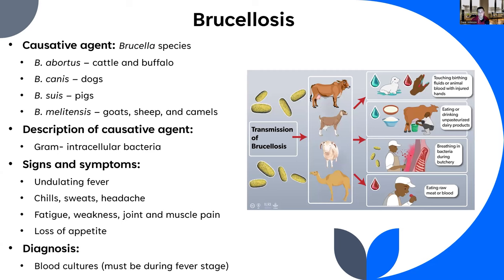Brucellosis is named after the Brucella species that cause it, with each species somewhat specific to its host: Brucella abortus in cattle and buffalo, B. canis in dogs, B. suis in pigs, and B. melitensis in goats, sheep, and camels. It is a gram-negative intracellular bacterium. The disease produces a pattern of undulating fever similar to malaria, along with undulating chills, sweats, headache, fatigue, weakness, and joint and muscle pain.